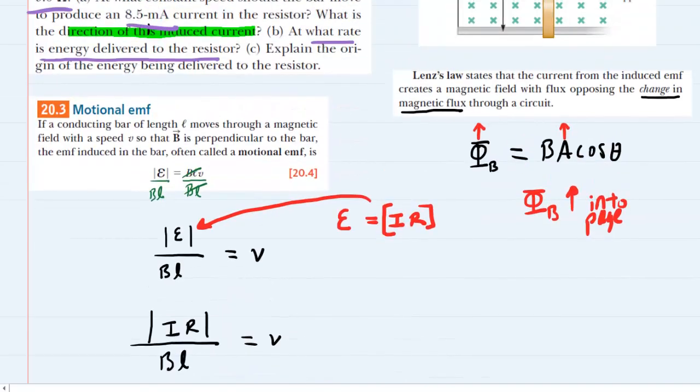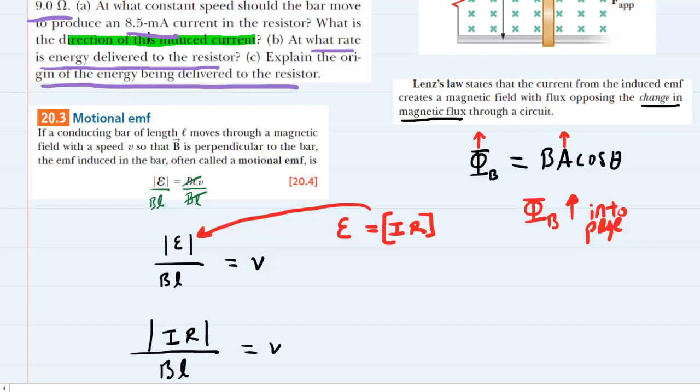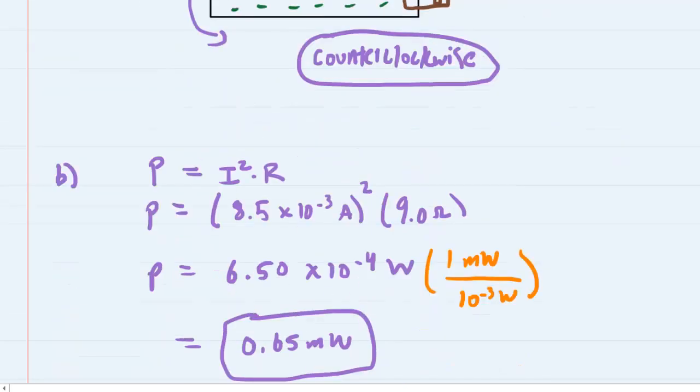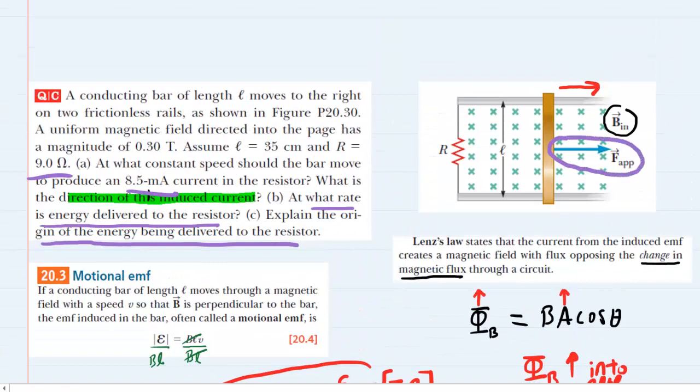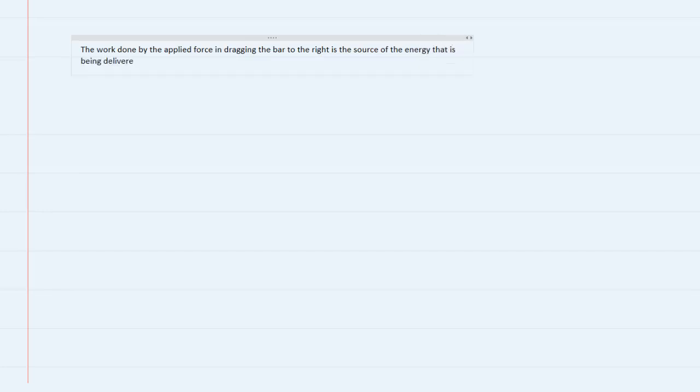And then finally on to part C, which is a conceptual type of question. It says, explain the origin of the energy being delivered to the resistor. So certainly if .65 milliwatts of power is being delivered to the resistor, there has to be a source of that power. It doesn't just show up out of thin air. Well, we recall that there was some external applied force that was pulling the bar to the right. It was indicated originally in the picture. And so we know that whenever a force is dragging something along by a certain distance, then there is work being done. So that actually is the source of the energy. We might say that the work done by the applied force in dragging the bar to the right is the source of the energy that is being delivered to the resistor. So this would be the correct answer for part C.